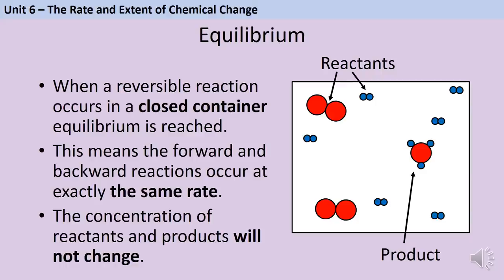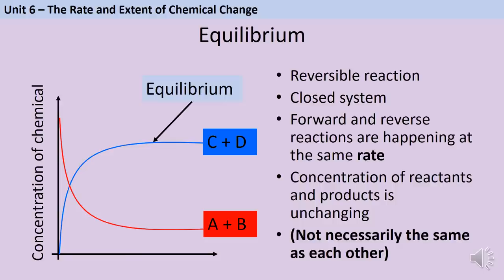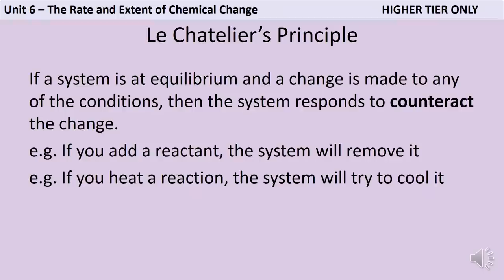When a reversible reaction occurs in a closed system it will eventually reach equilibrium, where the forward and backward reactions occur at the same rate. At this point the concentrations of reactants and products stop changing — not that they are equal to each other, just that they have stopped changing. On a graph, equilibrium is the point where the line completely flattens out.